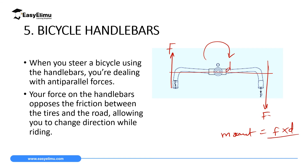If you want to turn in an anti-clockwise direction, you reverse the forces: the left handlebar moves down with force F and the right handlebar moves up with force F. Again, if you know the distance between them you can calculate the moment for this couple.